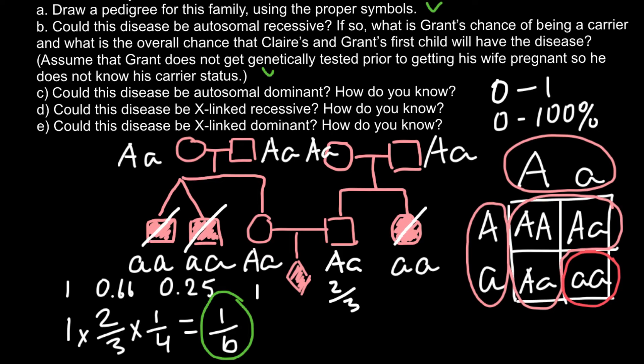Question (c): could this disease be autosomal dominant? No. If this were autosomal dominant — or X-linked dominant — we would see the disease affect at least one parent in each generation. With a dominant allele causing the disorder, any person carrying it would be phenotypically affected. We would not be able to see a picture where the genetic disorder disappears in one generation and reappears in the next, as happens here.